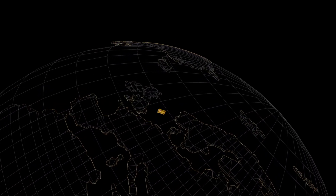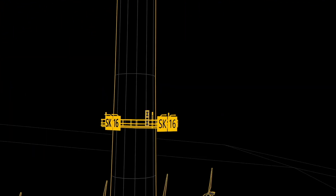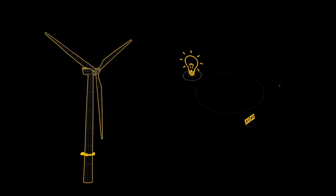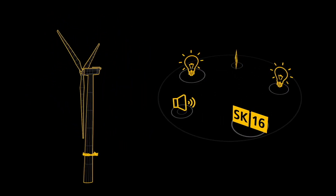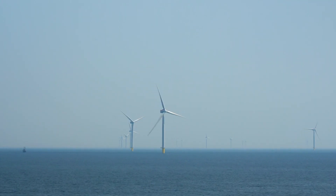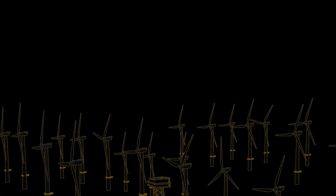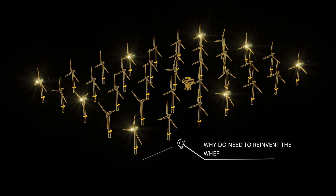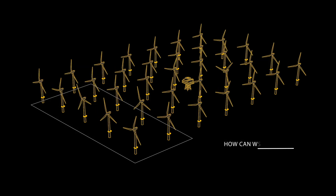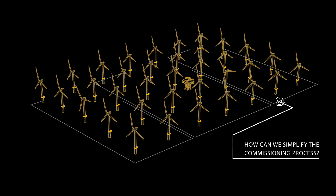Marking an offshore wind farm presents a unique challenge. Instead of standalone lights, we now have to tie together multiple components so that the entire wind farm looks like a single obstruction. As we worked on doing this, the first offshore wind farms quickly became large engineering projects. We felt that there had to be a better way. Why do we need to reinvent the wheel for every project? How can we simplify installation? And how can we simplify the commissioning process?